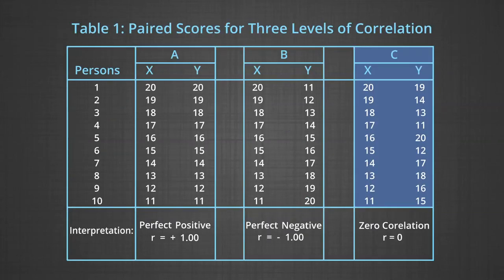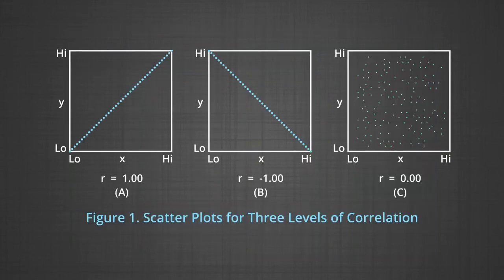The scores in column C of Table 1 show that it is difficult to find any particular trend of association between variations in the scores of X and Y. The correlation is essentially non-existent. The scatter plot for set C shows that scores fall all over the surface of the graph such that change of variation in one variable is unrelated to the other variable. Hence, the value of R is equal to 0.00.